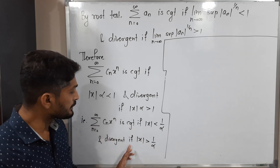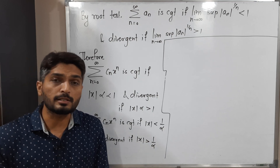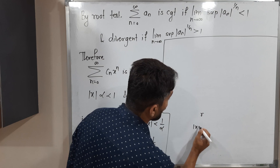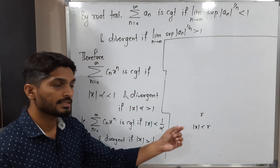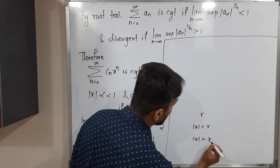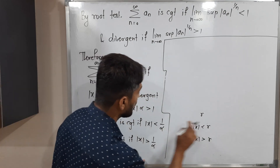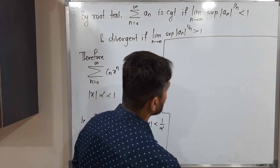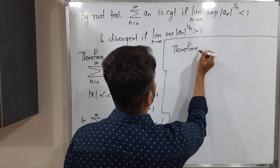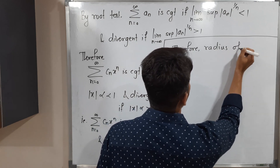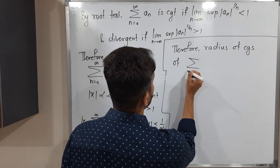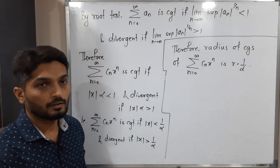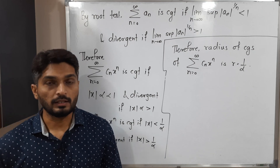So we have: the series is convergent if |x| < 1/α and divergent if |x| > 1/α. This matches exactly the definition of the radius of convergence R: the series is convergent if |x| < R and divergent if |x| > R. Comparing, we conclude that the radius of convergence R = 1/α.